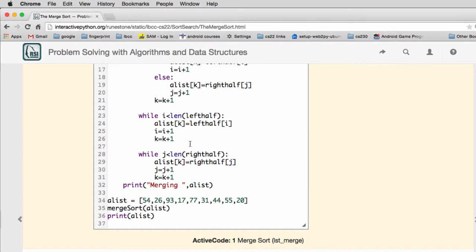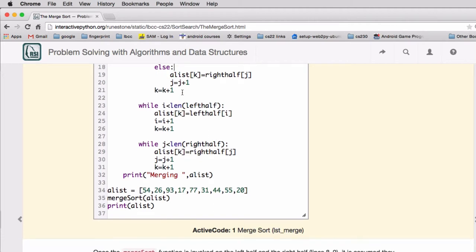And then if one end ends before the other, that's what this final while does. When it runs out of one, it just has to move the rest of the last list in. So there's a little tail that has to move in here.